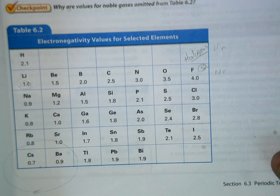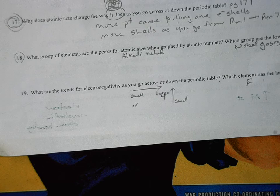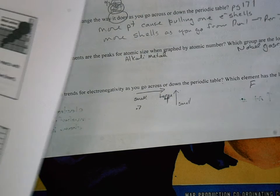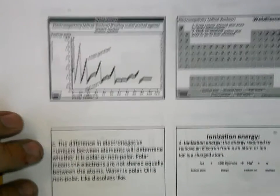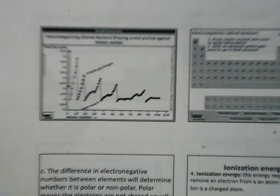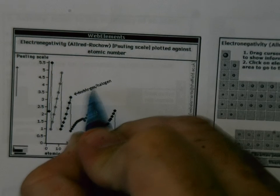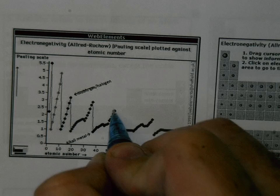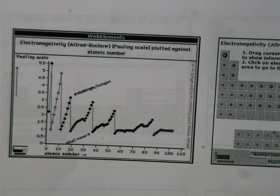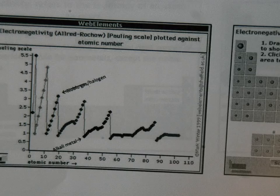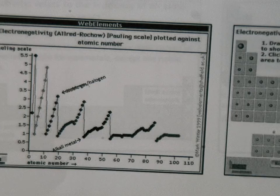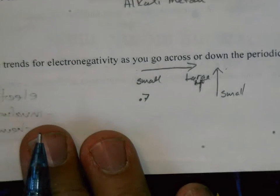If you'd like a graph of electronegativity, the peaks are going to be the halogens. In your notes, fix it to say: for electronegativity, the peaks are the halogens. If it's ionization energy, it would be the noble gas. But for electronegativity, the peaks are the halogens.